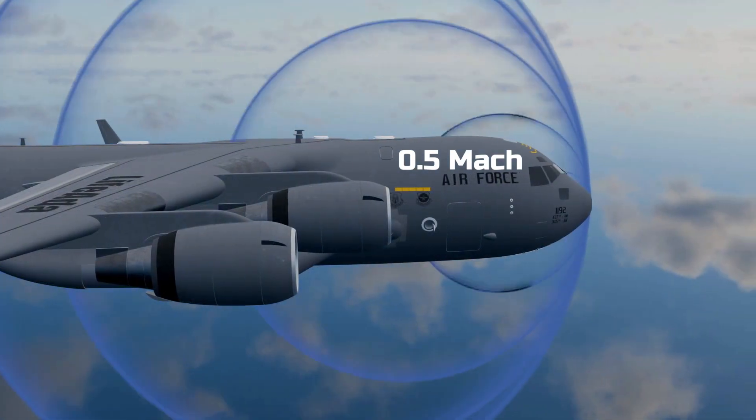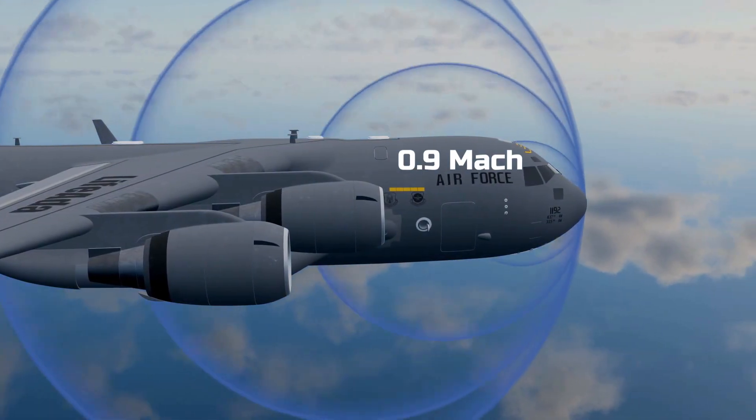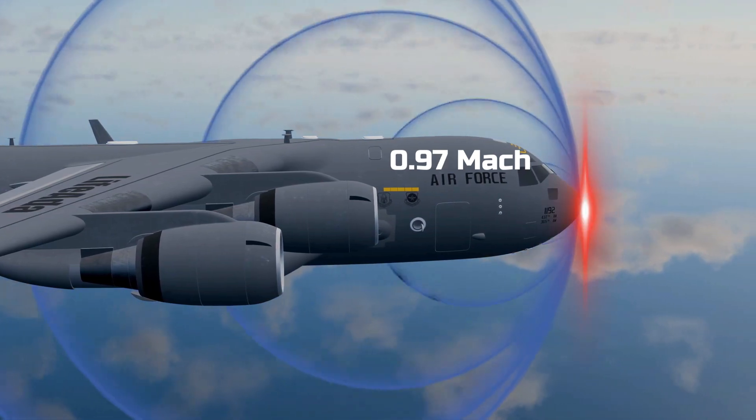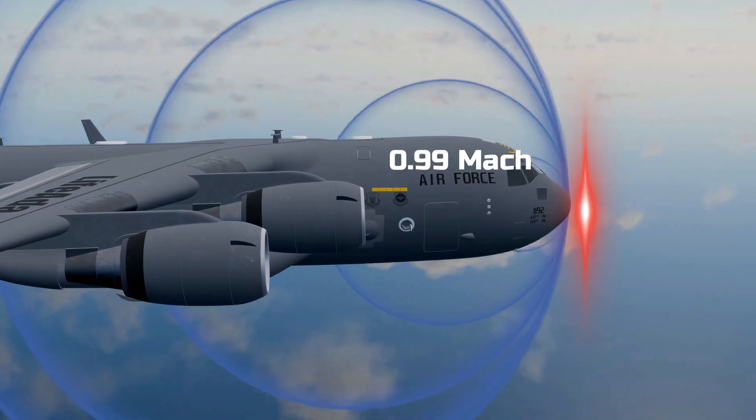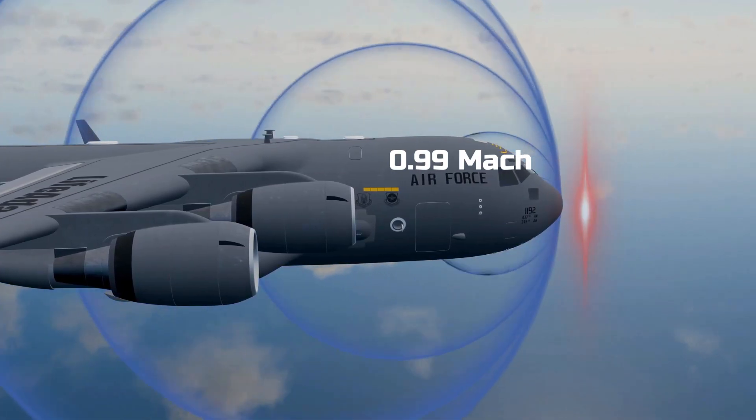However, as the aircraft approaches Mach 1, the waves cluster at the front, creating a pressure barrier. Only if the aircraft has sufficient thrust can it break through this barrier, otherwise it remains below Mach 1.